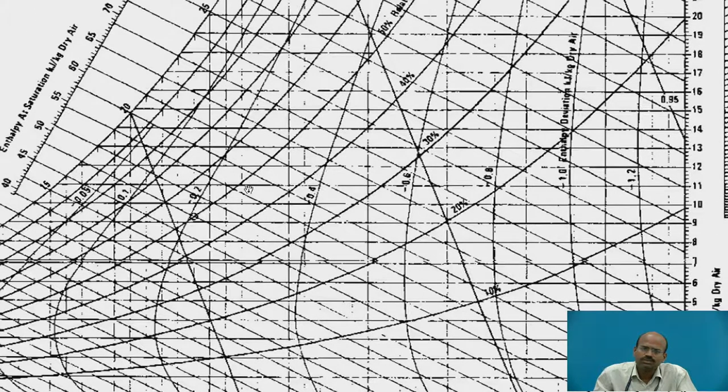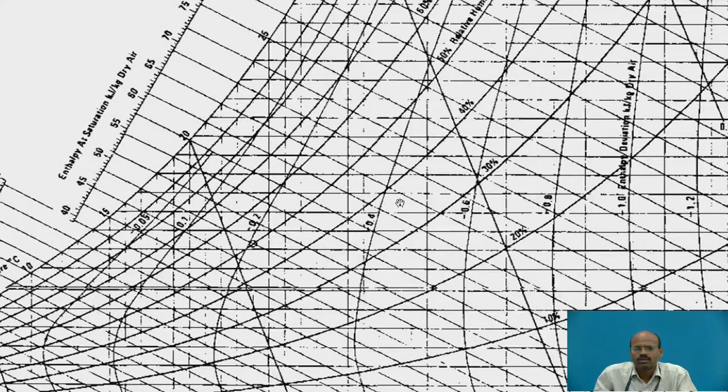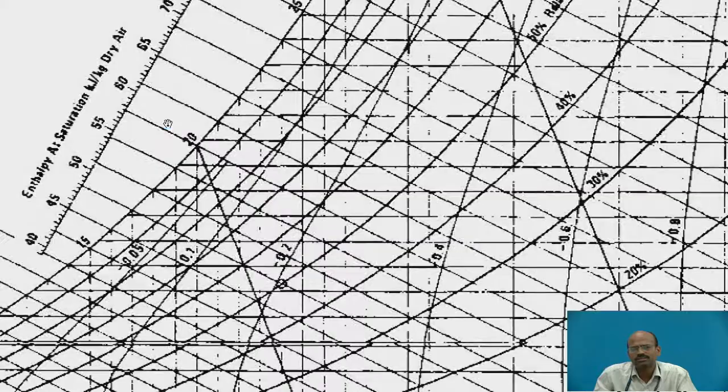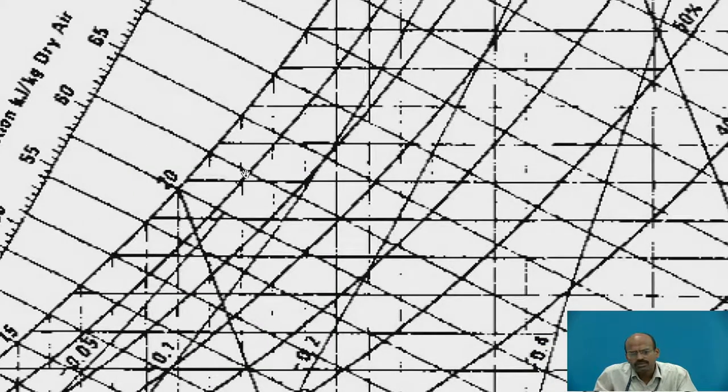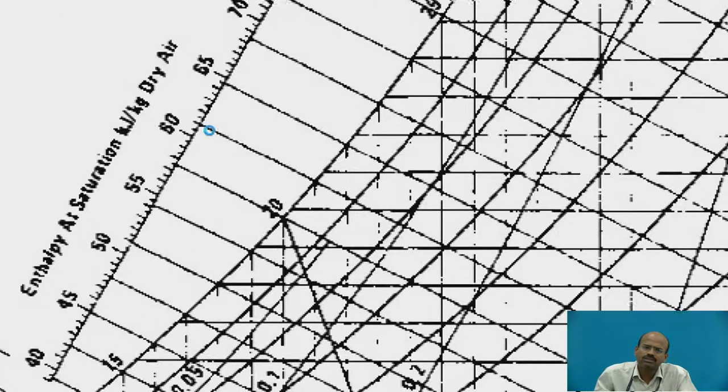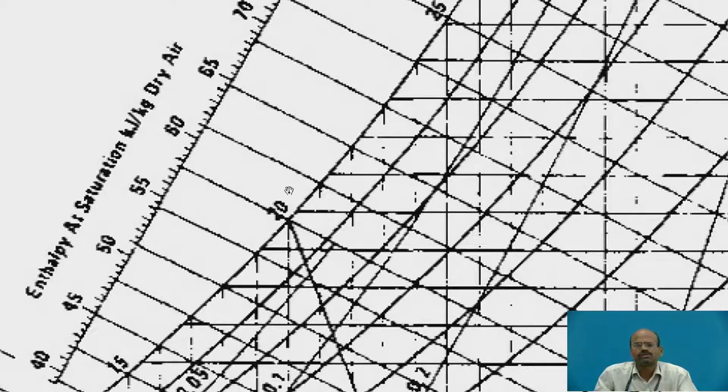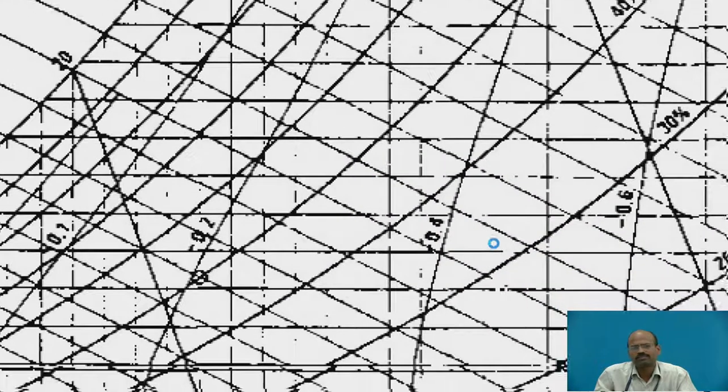Now, these curves are enthalpy deviations. For usual level, neglecting the error in the WBT and enthalpy lines means we have to assume that if we extend this line, the error will be neglected and we can consider this line is also isenthalpic line. For WBT and enthalpy, the same line we can refer. Isenthalpic line of suppose 52 kilojoule per kilogram of dry air and corresponding WBT is 21 degrees Celsius. This line will be of isenthalpic and WBT line. For air washer, we have to refer this line.